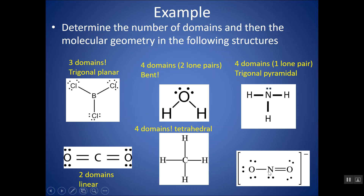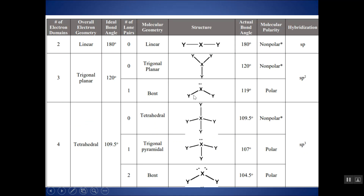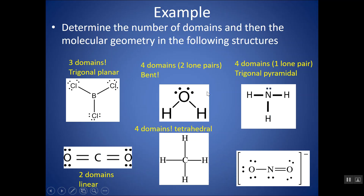And this nitrogen has one, two, three domains — remember, bonds of any sort and lone pairs all count as one. Three domains, one lone pair — this is actually bent. So sometimes a structure might be drawn looking linear, but in actuality it is not. That's why it's important to know the molecular geometry so you have more information about the 3D shapes. We're going to explore this more in a virtual lab so you can play around with the structures and see the 3D shape.